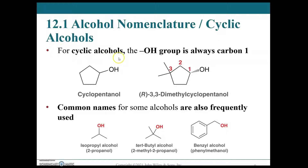For cyclic alcohols, the hydroxyl group is always on carbon one. We're looking at compounds that only contain an alcohol functional group — we'll build this out for compounds with multiple functional groups as we discuss this further. The hydroxyl group defines carbon one, so cyclopentanol. In this case, it would be 3,3-dimethylcyclopentanol.